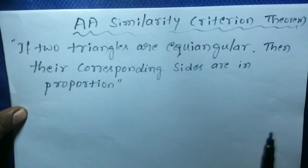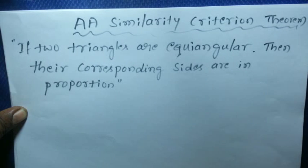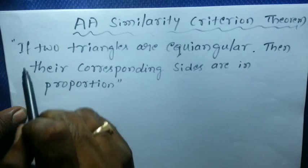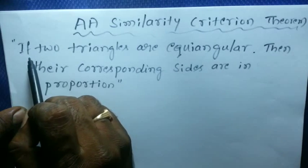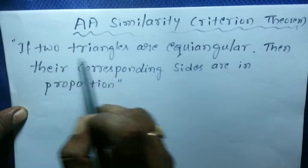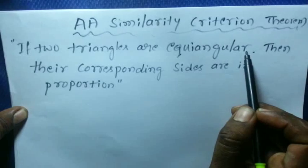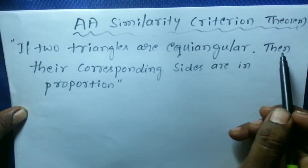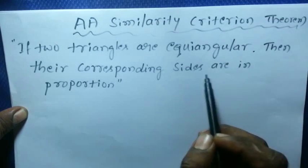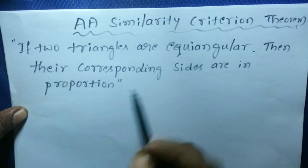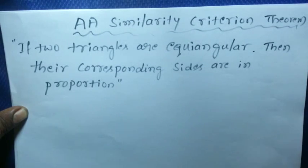The statement has two groups. One is the data: if two triangles are equiangular — this is the data. And then, their corresponding sides are in proportion — this is what we have to prove.